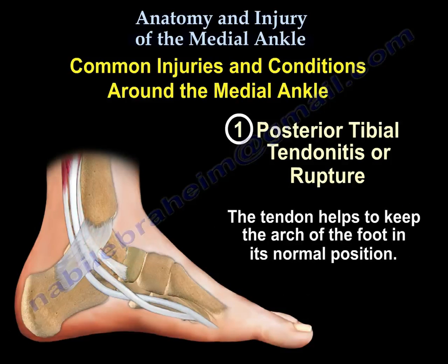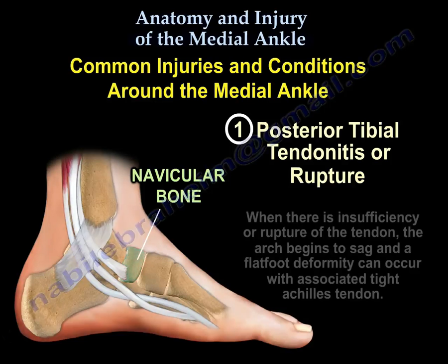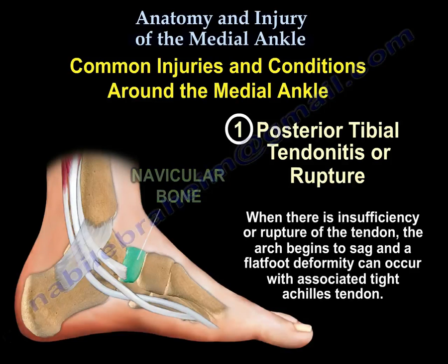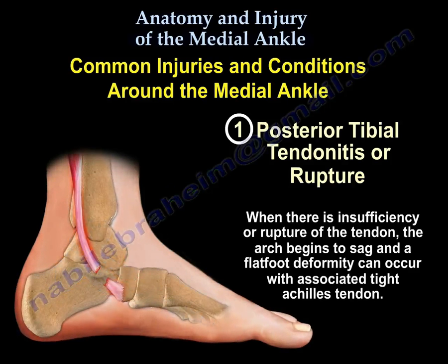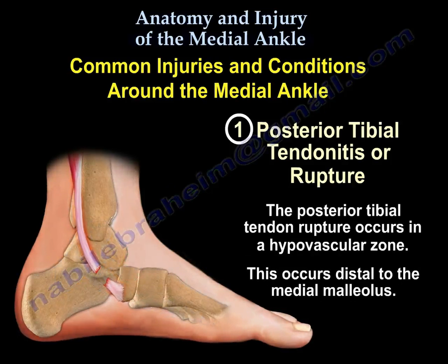The tendon helps to keep the arch of the foot in its normal position. When there is insufficiency or rupture of the tendon, the arch begins to sag and a flatfoot deformity can occur with an associated tight Achilles tendon. The posterior tibial tendon rupture occurs in the hypovascular zone, which is usually distal to the medial malleolus.